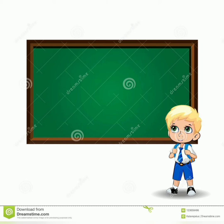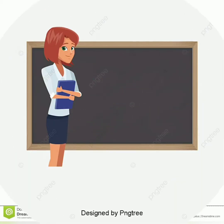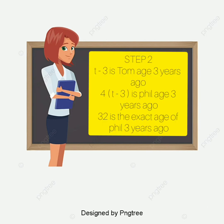Therefore, we will let t equal the age of Tom three years ago. Step 2 deals with devising a plan or translating. We need to make an equation that represents their ages three years ago.